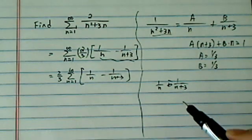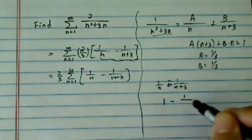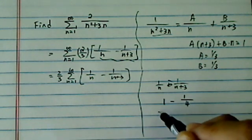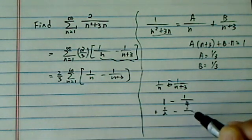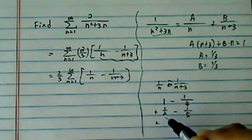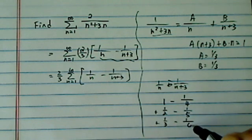So when n equal to 1, you have 1 minus 1 over 4, then you're going to plus 1 over 2 minus 1 over 5 plus 1 over 3 minus 1 over 6.